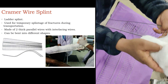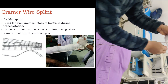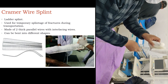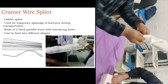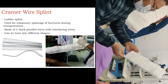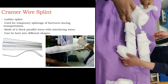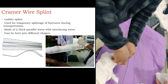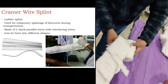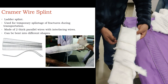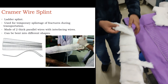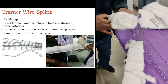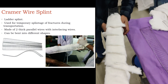The most commonly applied splint in hospitals is the crammer wire ladder splint. This crammer wire ladder splint is used for temporary splintage of fractures during transportation, and it is made up of mild moldable steel with a coating of PVC or vinyl.